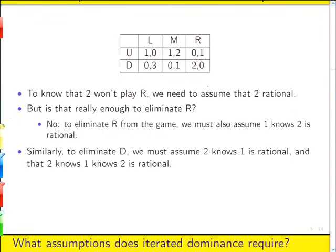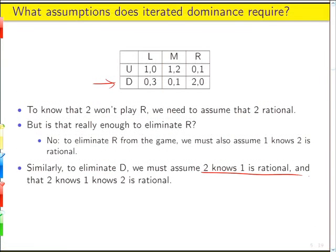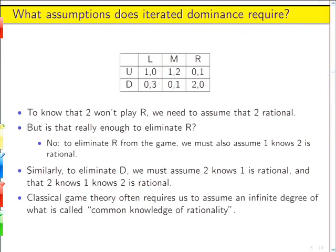And then to eliminate D, which was the next thing we did here, we have to assume that two knows one is rational and that two knows one knows two is rational, right? Which is just one of those things that rapidly becomes annoying. And this is a simple game. Two players, one with two actions and one with three actions, and already we're getting into this, well, I know that you know that I know, right?